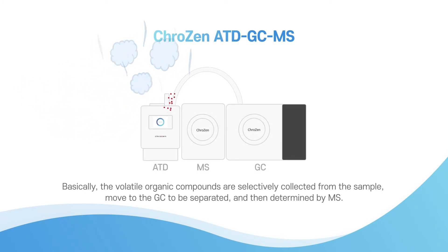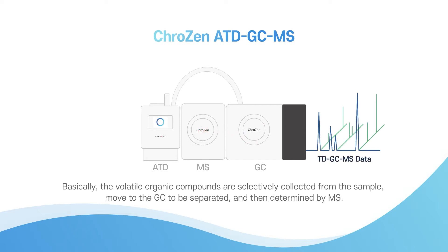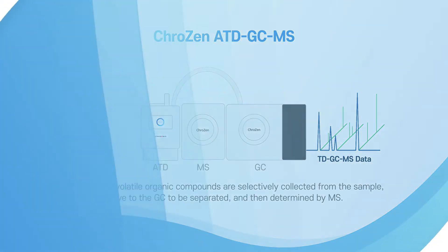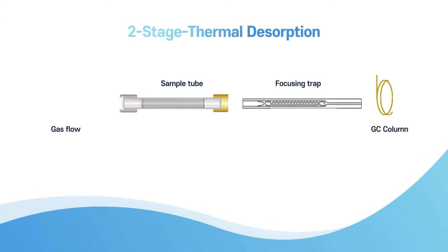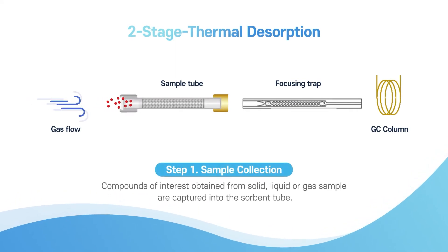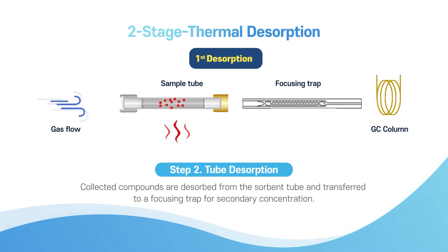Basically, the volatile organic compounds are selectively collected from the sample, moved to the GC to be separated, and then determined by MS. Let's take a look at how thermal desorption works. Step one: sample collection — compounds of interest obtained from solid, liquid, or gas samples are captured into the sorbent tube.